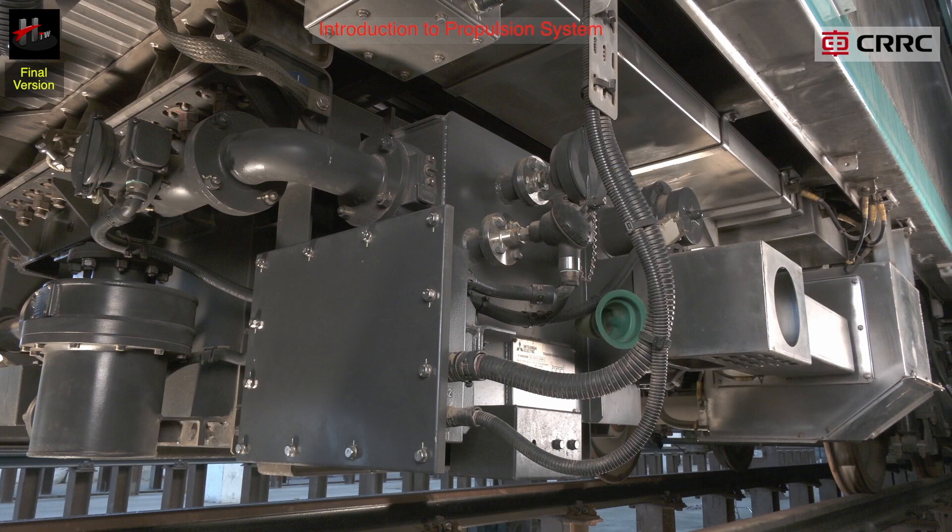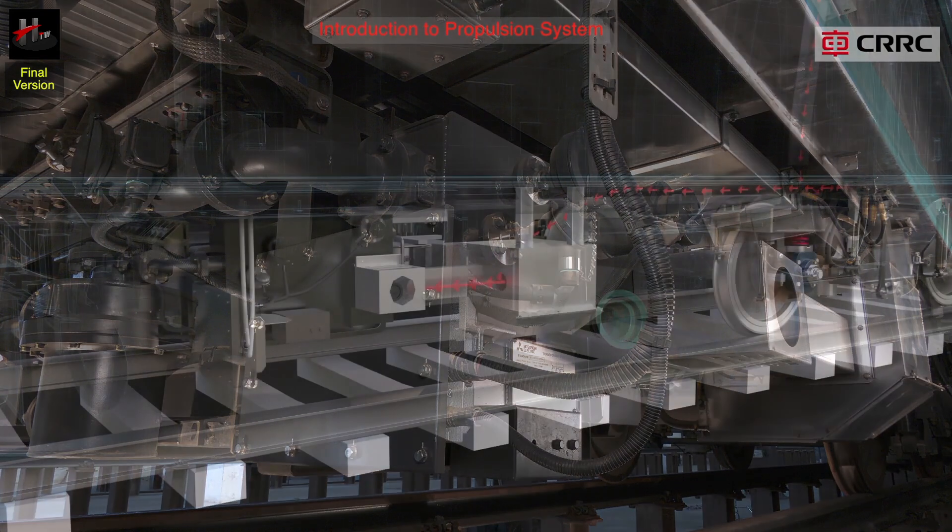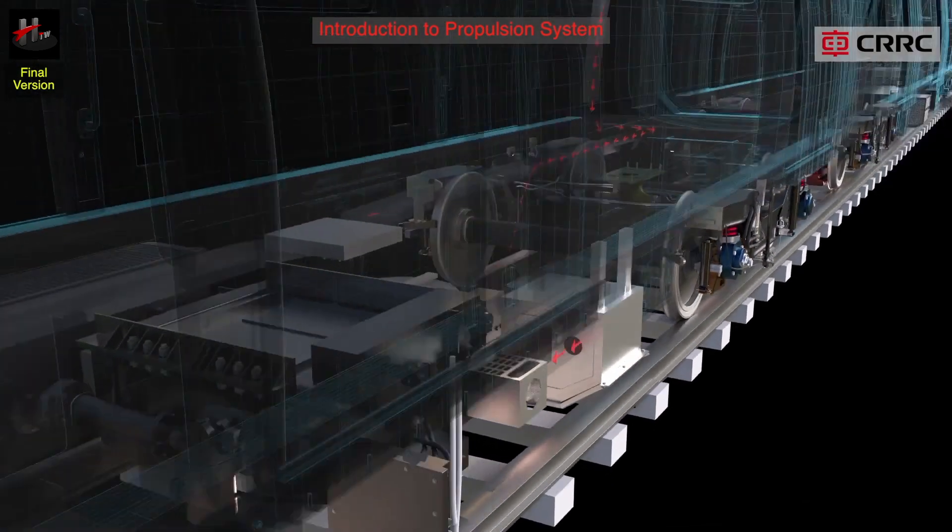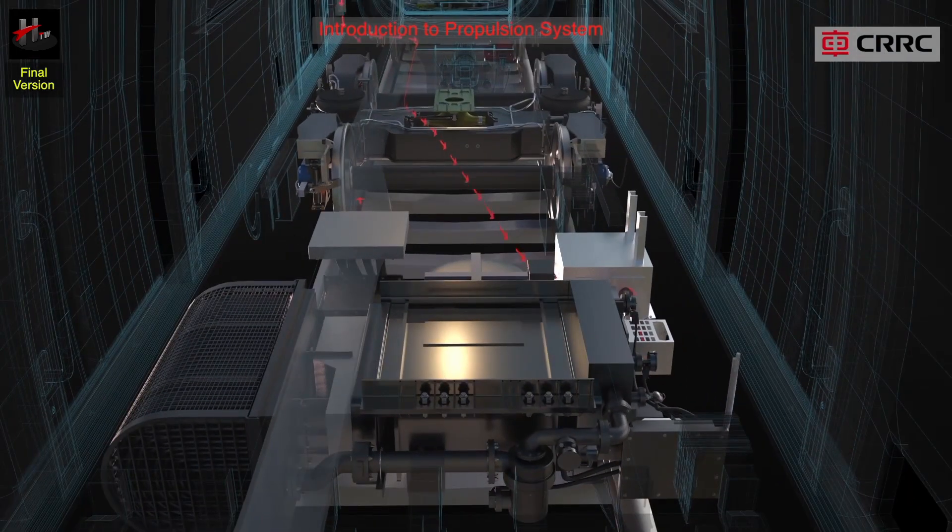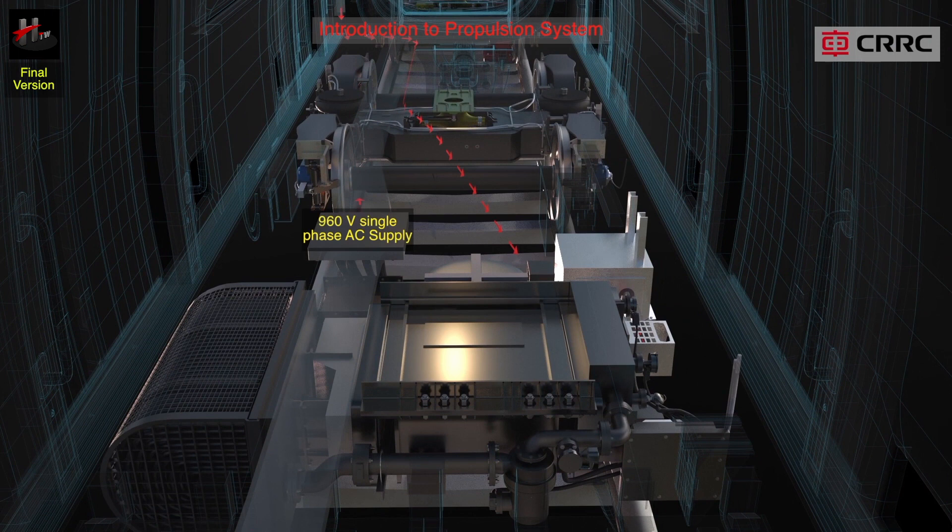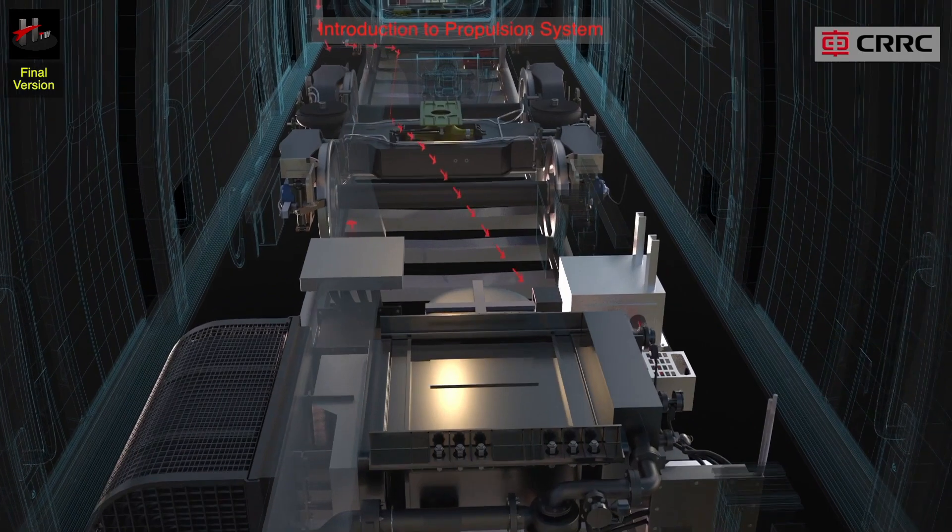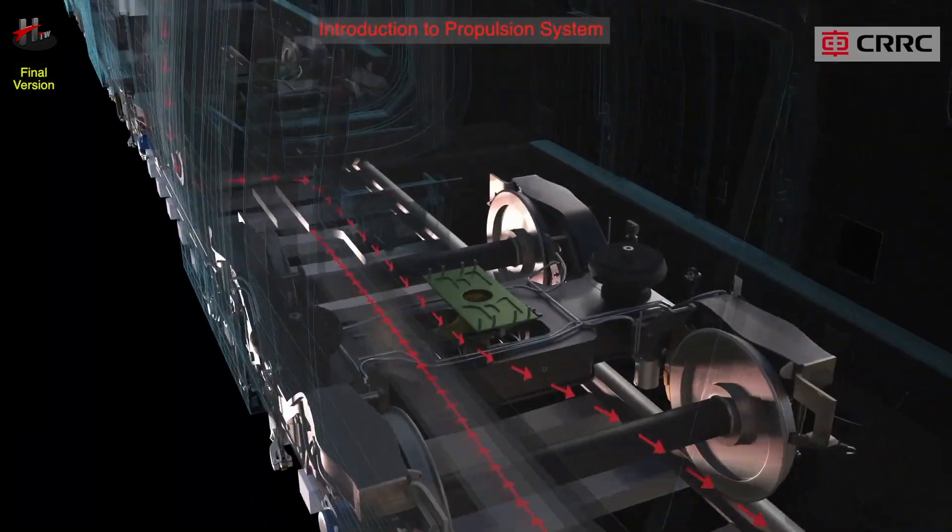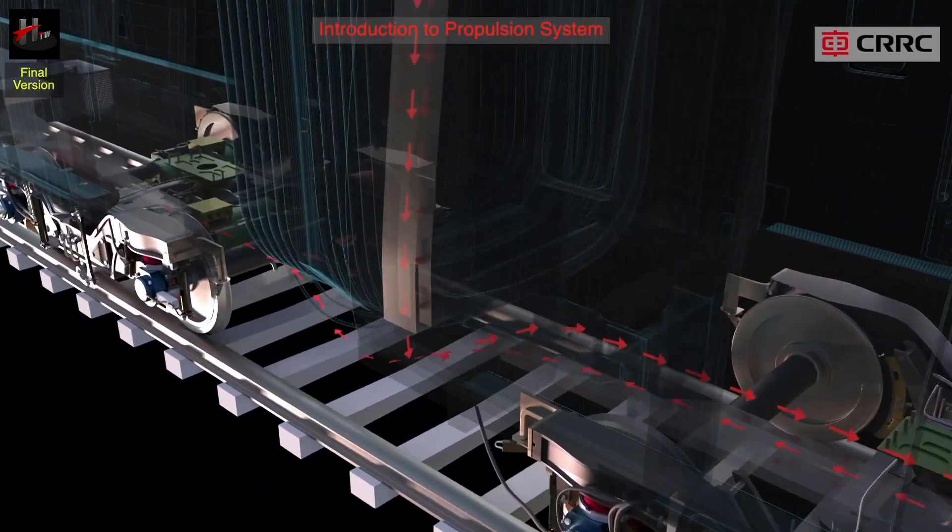The main transformer steps down the supply to 960V AC. The single phase AC supply is fed into the converter-inverter unit installed in the MCAR.